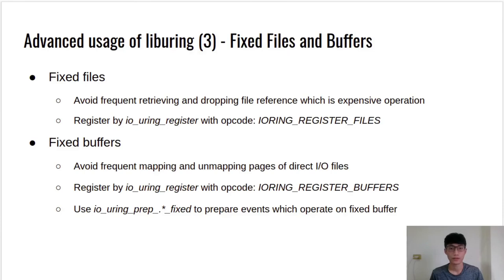The third usage is fixed files and buffers. Imagine a scenario where a file descriptor is filled into an SQE and submitted to the kernel. The kernel must retrieve a file reference. Once I/O has completed, the file reference is dropped again. The cost of this process is not cheap, and it may happen over and over again. To alleviate this issue, io_uring provides a way to pre-register a file set for an io_uring instance, done by using the register function with opcode IORING_REGISTER_FILES. Besides fixed files, io_uring also offers a function to pre-register a set of fixed I/O buffers, achieved by registering with opcode IORING_REGISTER_BUFFERS. This is especially suitable for direct I/O files because when direct I/O files are used, the application pages must be mapped to the kernel before they can be operated and unmapped after the operation completes — which is very time-consuming. However, with fixed buffers, it only needs to be mapped and unmapped once.